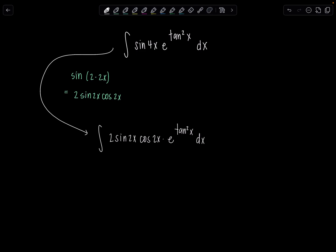But then we're going to need to keep going further because still the argument's not matching, right? And this is where things kind of take a spicy little turn because we end up using somewhat unpopular versions of those double angle identities. Okay, so for now we have 2 sine 2x cosine 2x times e raised to the tan squared x dx.